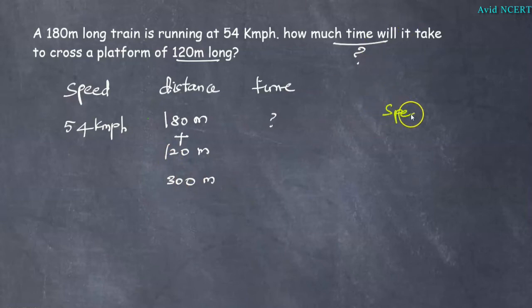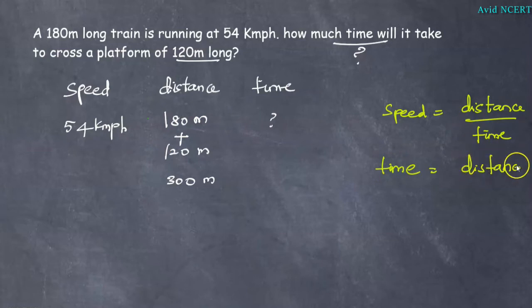And now the formula we know here is speed equals distance by time. So here we have to find time, therefore time equals distance by speed.